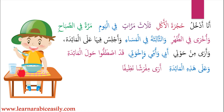أرى means 'I see.' If you want to say 'you see' it becomes ترى, and 'he sees' becomes يرى. مفرشاً means a tablecloth. مفرشاً has a فتحة because it is the مفعول به, the direct object. نظيفاً means 'clean,' so مفرشاً نظيفاً means 'a clean tablecloth.' نظيف is the صفة, the adjective qualifying مفرش, and since مفرش is accusative (منصوب), the adjective نظيف must also be accusative.